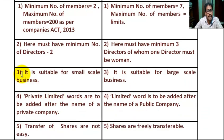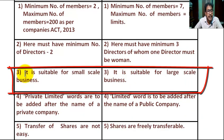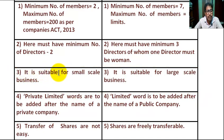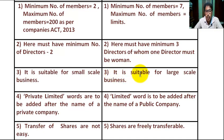Number three: a private limited company is suitable for small scale industries. A public limited company is suitable for large scale business.